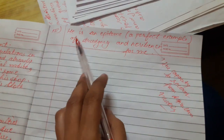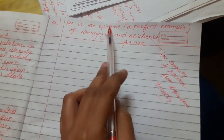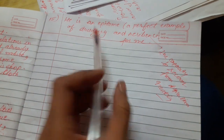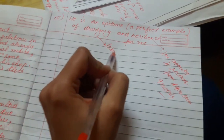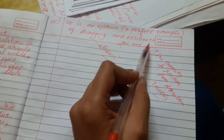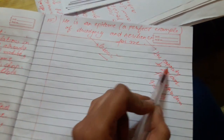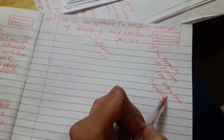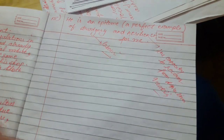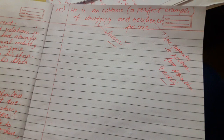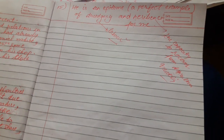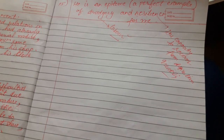So the last sentence is: 'He is an epitome of drudgery and resilience for me.' Epitome means a perfect example; drudgery means labor; and resilience means the capacity to recover from difficulties — wo mere liye drudgery aur resilience ka example hai. Thanks for watching, please subscribe if you want solutions for some other new cue cards. Thank you everyone.